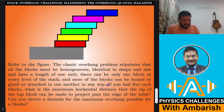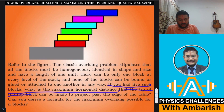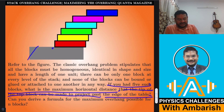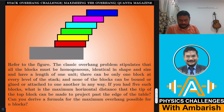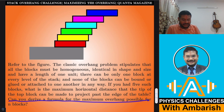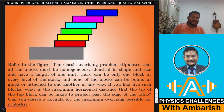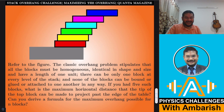If you had five such blocks, what is the maximum horizontal distance that the tip of the top block can be made to project past the edge of the table? We are interested in maximizing this overhanging distance from the edge of the table to the right edge of the top block. Can you also derive a formula for the maximum overhang possible for n blocks? You can give it a try — I will get into my analysis right away.